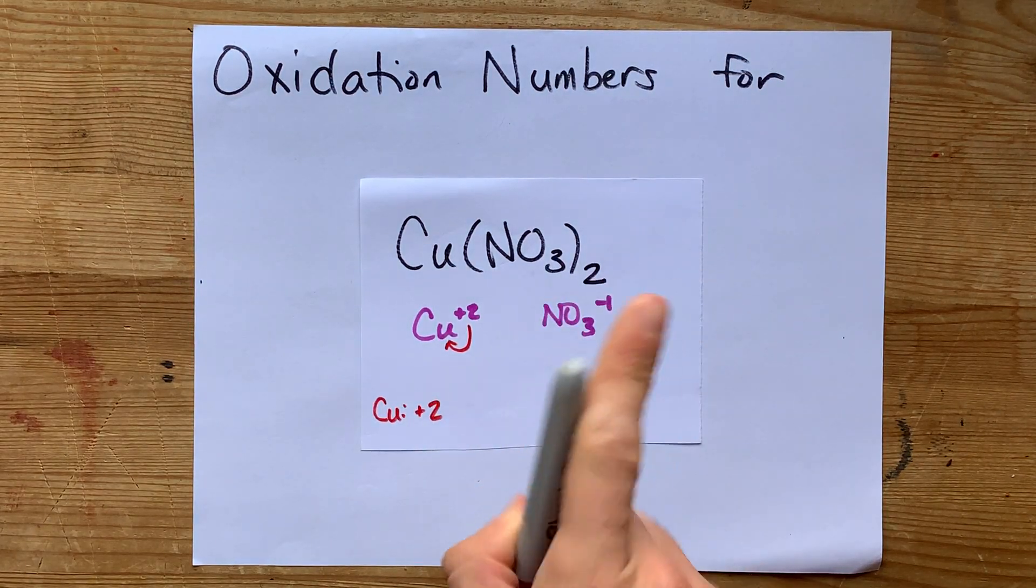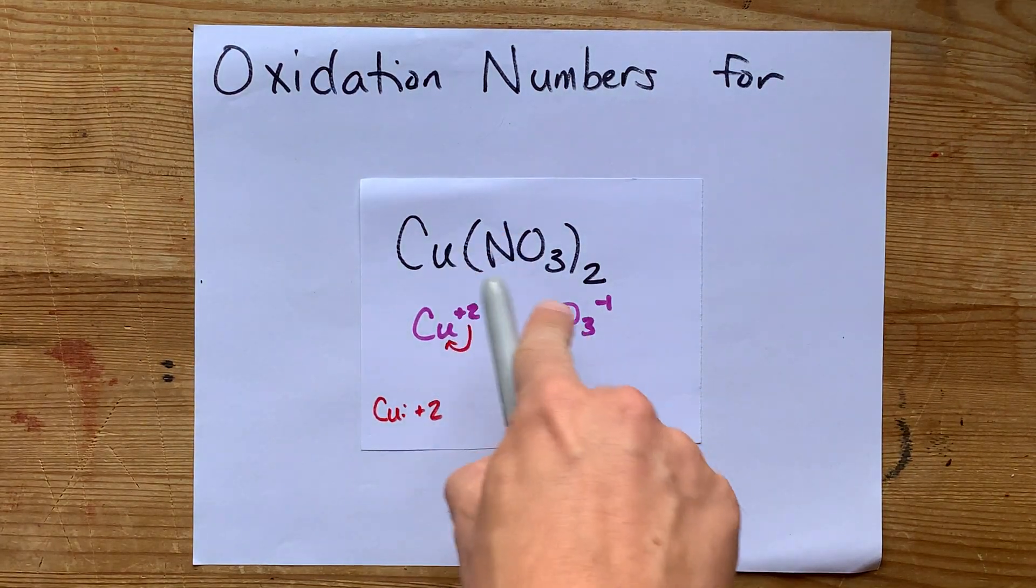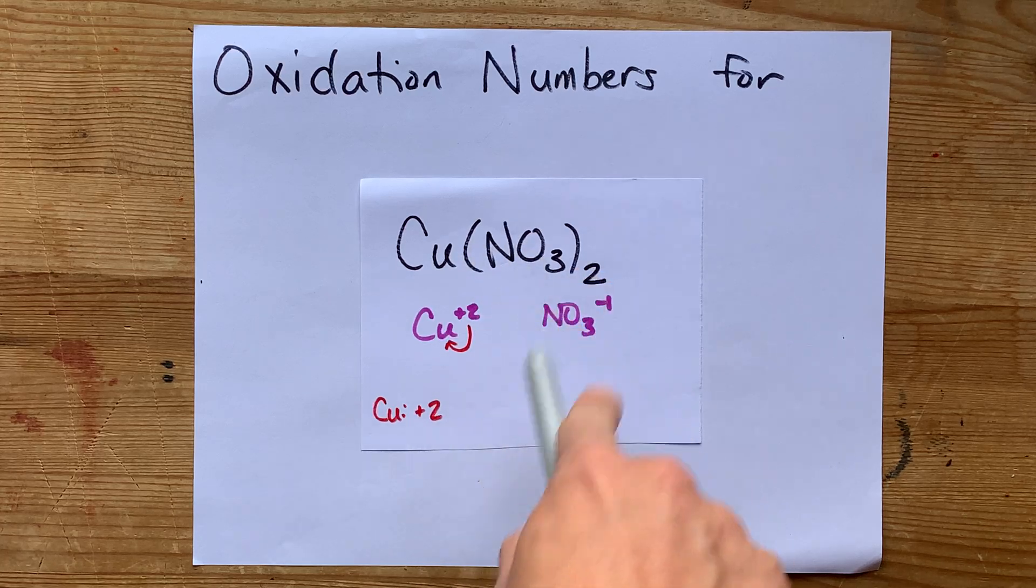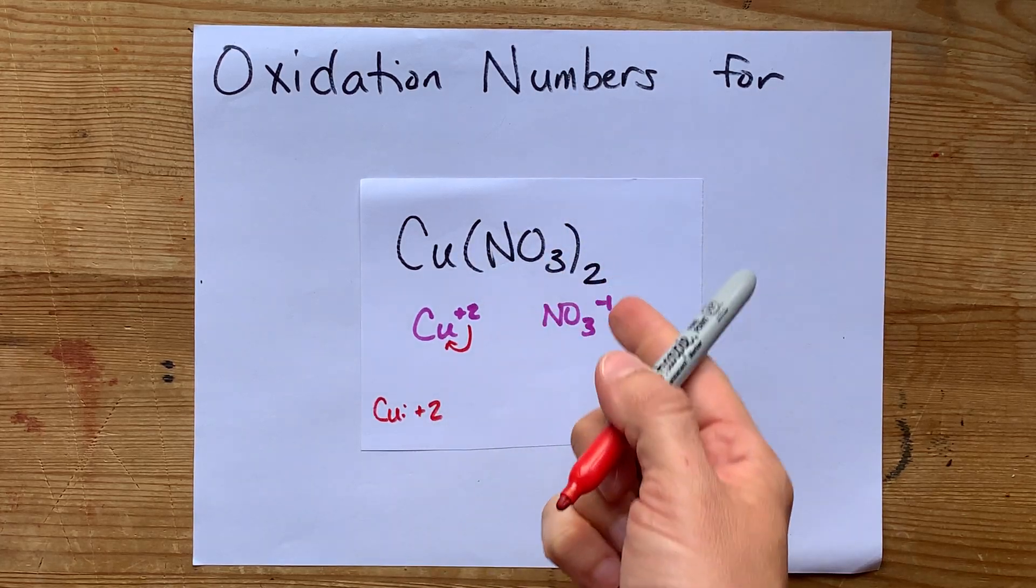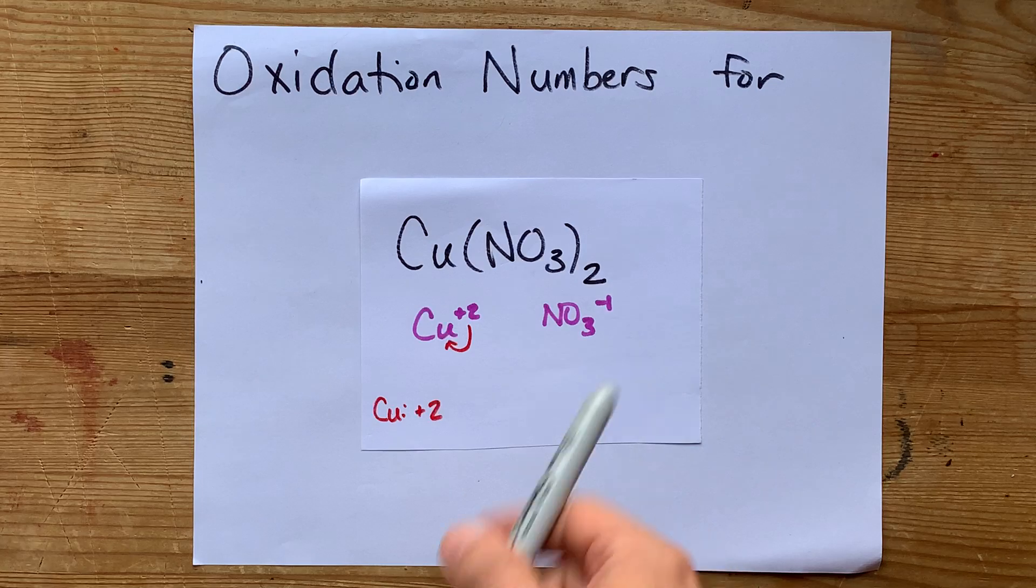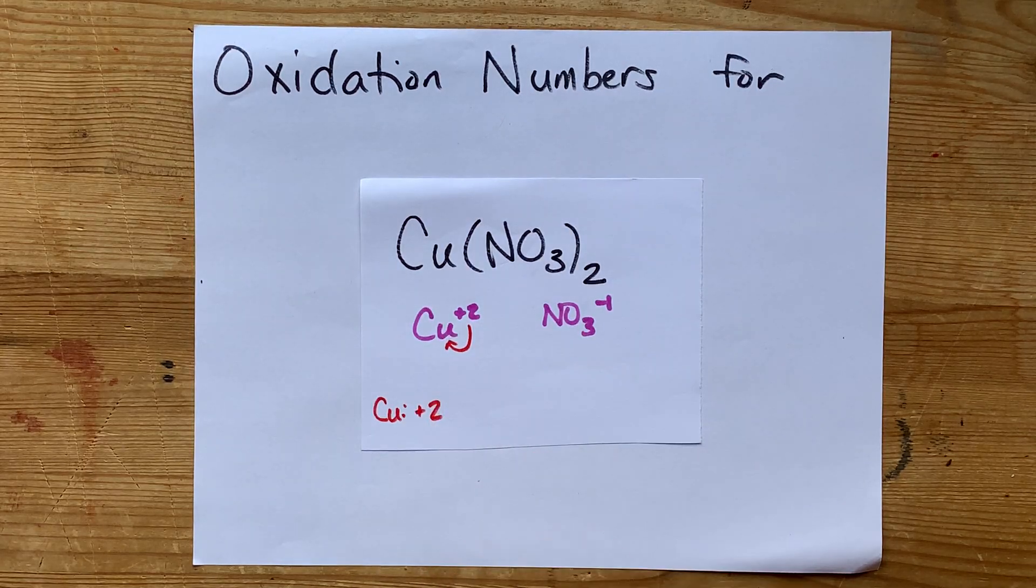Now, nitrate's another story. Now, there's two of these, but we can really just figure out the oxidation numbers within a single ion, and it's going to be the same for both of the ions.